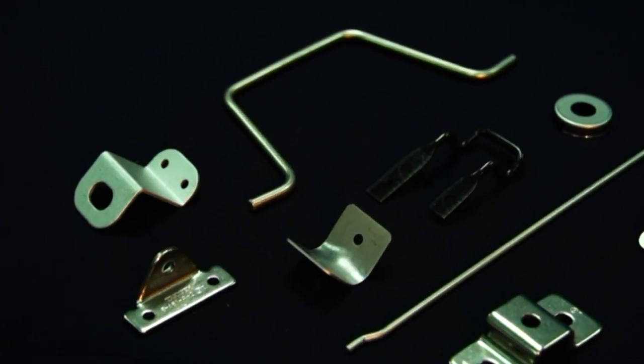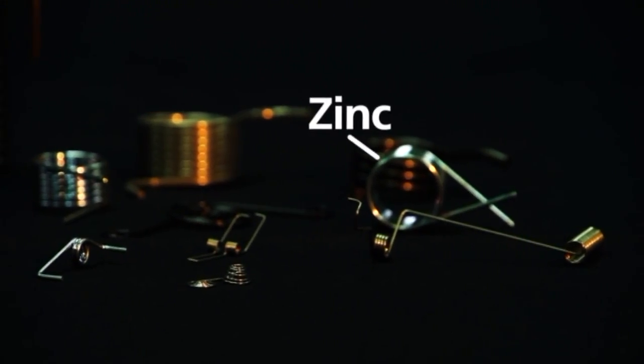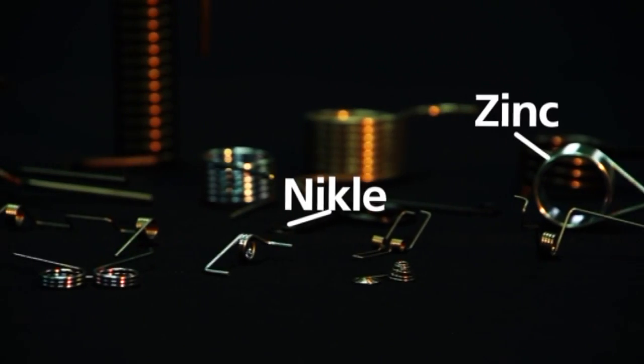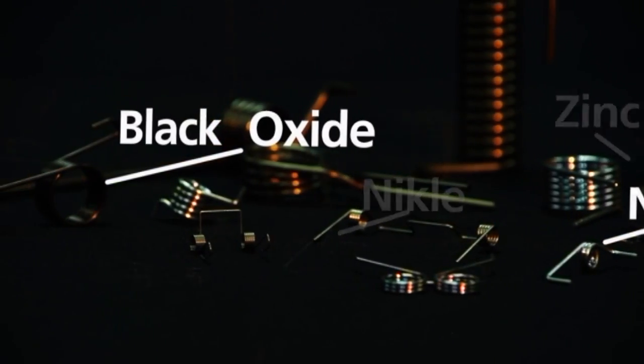Plating: metal plating on the surface of the spring. There are several types of zinc plating, nickel plating, black oxide plating, and so on.